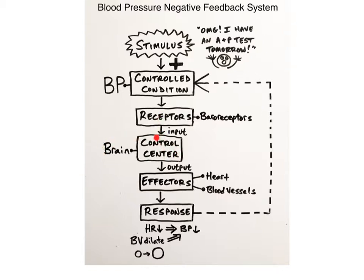The brain takes in this input, processes the information, and generates output in the form of nerve impulses to the effectors, which are cardiac muscles in the heart and the smooth muscles in the walls of blood vessels. The heart responds by decreasing the rate of contraction of its cardiac muscle cells, and the smooth muscles in the blood vessels dilate, or increase their diameter, which results in a decrease in blood pressure. This drop in blood pressure then feeds back to the baroreceptors, which detect this decrease, and the controlled condition of blood pressure is returned back to its normal homeostatic range.